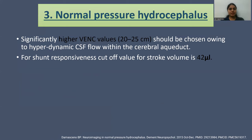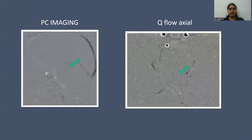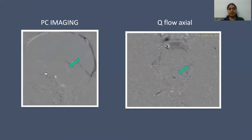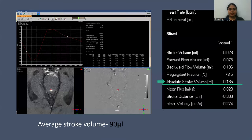In normal pressure hydrocephalus, significantly higher VEC values of between 20–25 cm/s should be chosen owing to the hyperdynamic CSF flow within the cerebral aqueduct. For shunt responsiveness, the cut-off value for stroke volume is 42 microliters. As we can see in phase contrast imaging, there is good to-and-fro flow; however, the pulse pressure is increased. In the Q-flow imaging technique, average stroke volume came out to be 90 microliters, which shows good response post-shunting of an NPH patient.